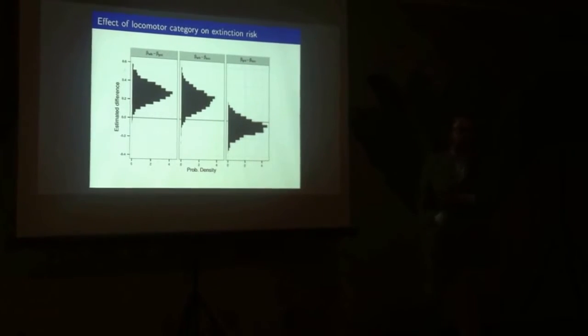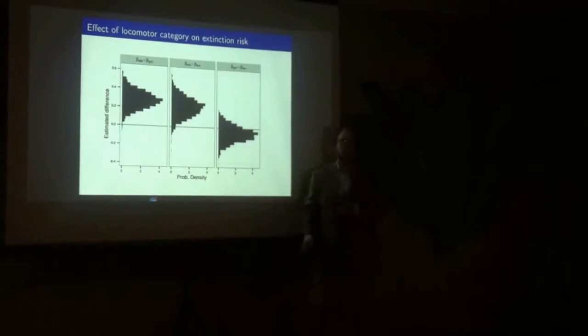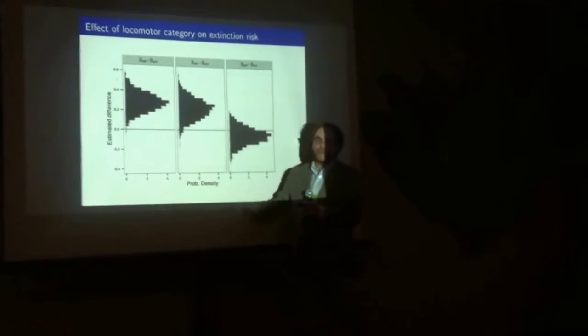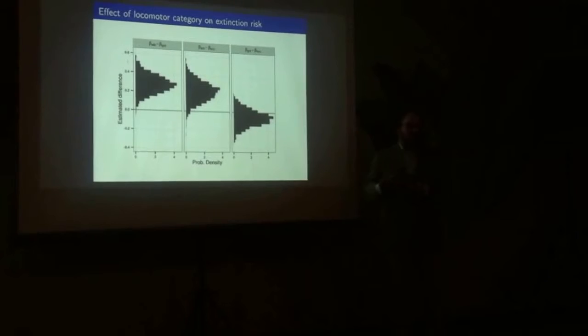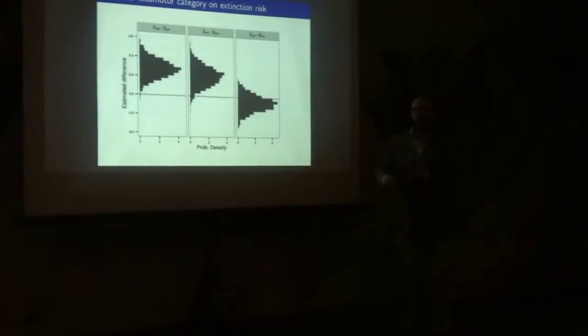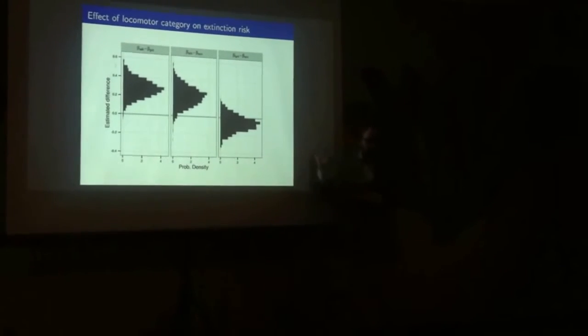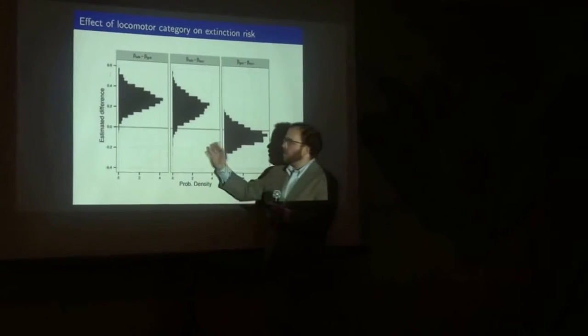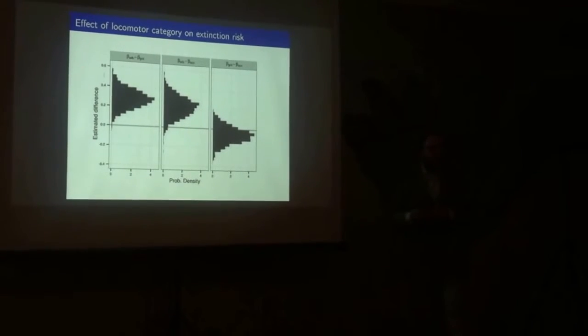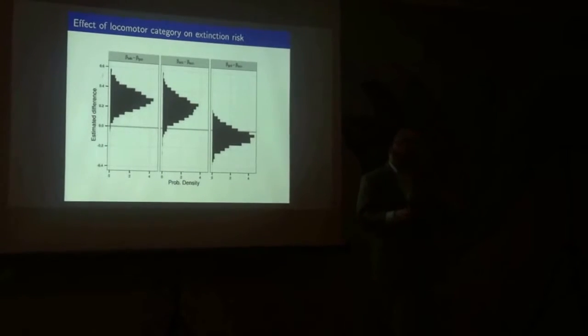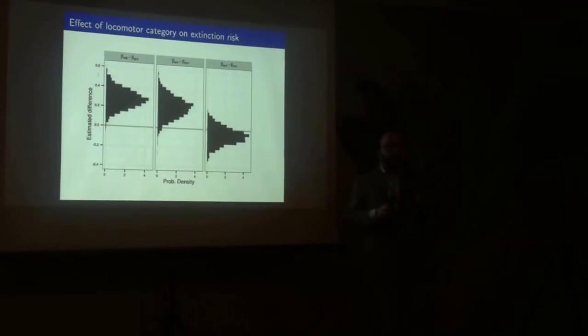We can do similar things with locomotor category, where we have arboreality versus ground-dwelling. It's great to be ground-dwelling. It's not great to be arboreal. Similar situation with arboreality and scansoriality. Scansoriality is a term just describing that you can do kind of both. You can think of mice. And then we have ground-dwelling and scansoriality, where there's no evidence that one is necessarily better than the other, or no strong evidence. But again, this idea that if you have a more generalized system that's ground-dwelling or scansorial, you're more likely to have a greater duration in the fossil record. If you're arboreal, you might be having a greater risk of habitat loss.